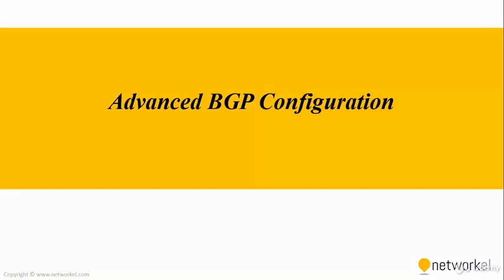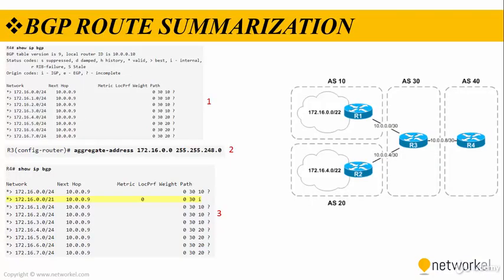In our next section we are going to talk about advanced BGP configuration. The first thing we are going to take a look at is BGP route summarization. BGP route summarization is done with the aggregate address command.